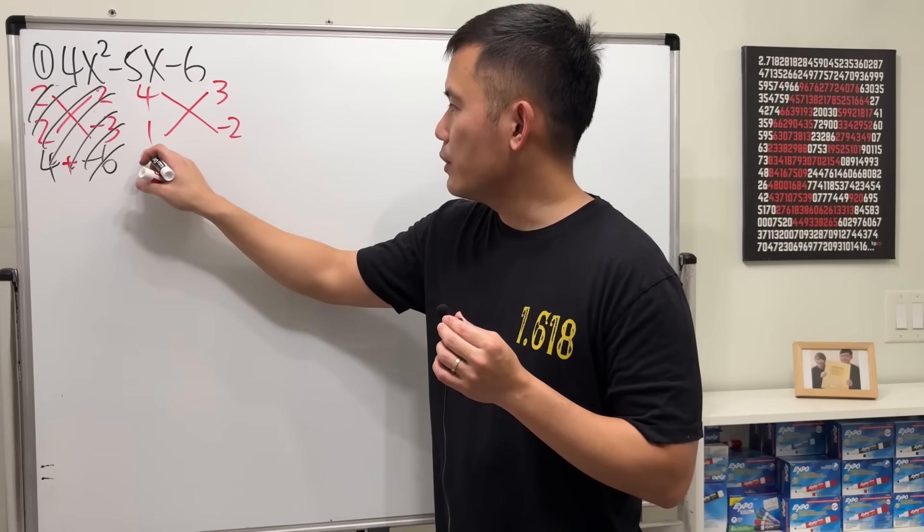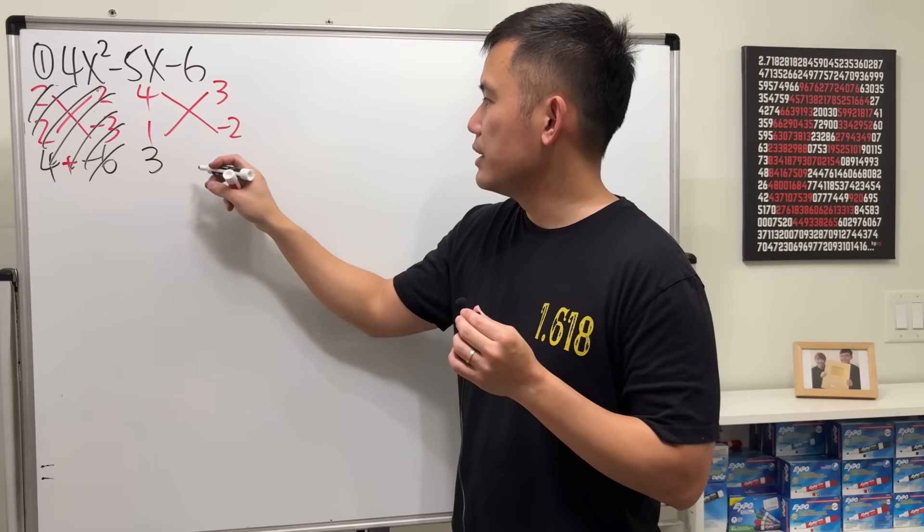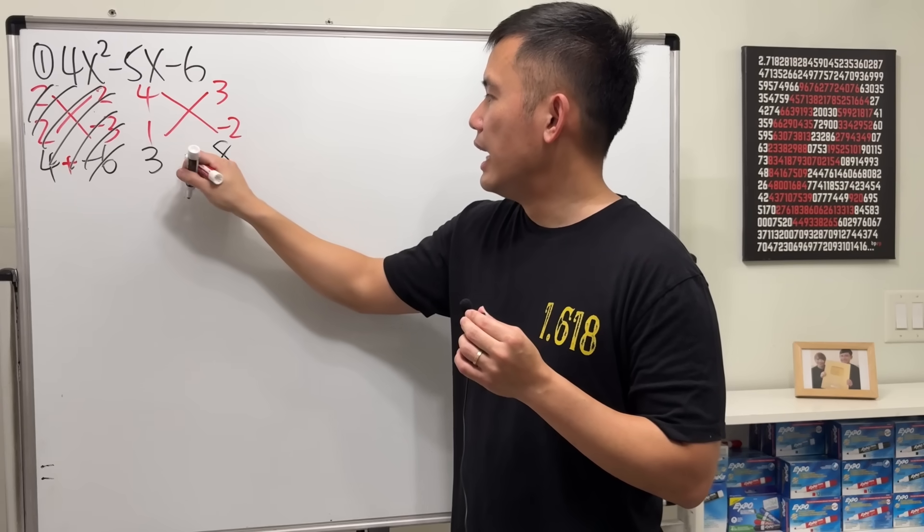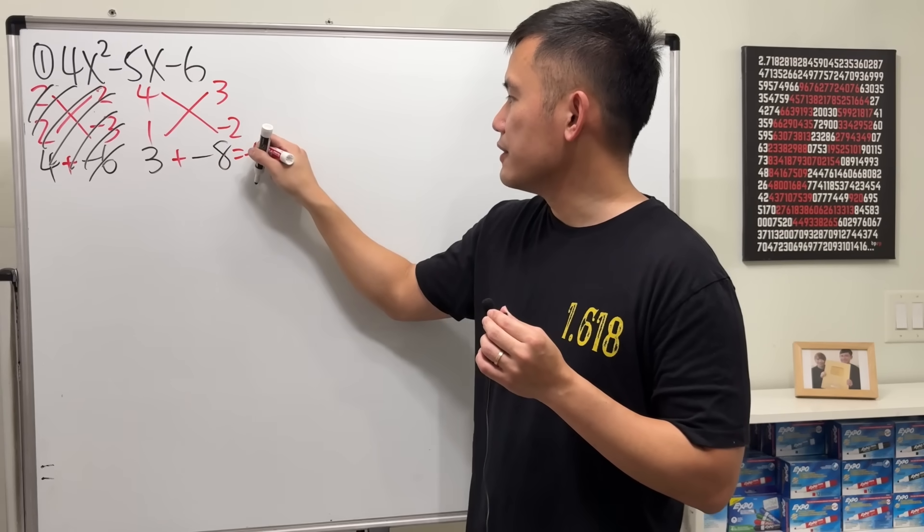Here we do 3 times 1, which is 3. 4 times negative 2 is negative 8. Add them up. We do get negative 5. So it checks.